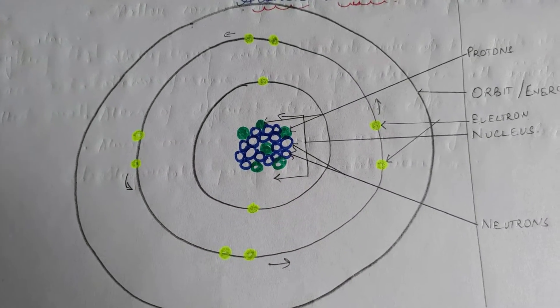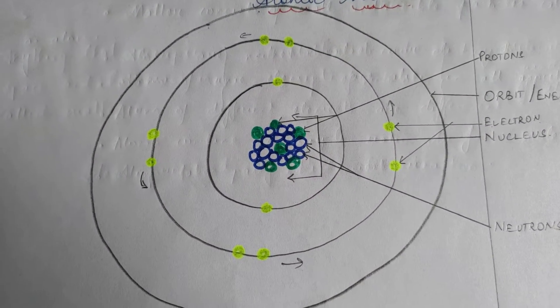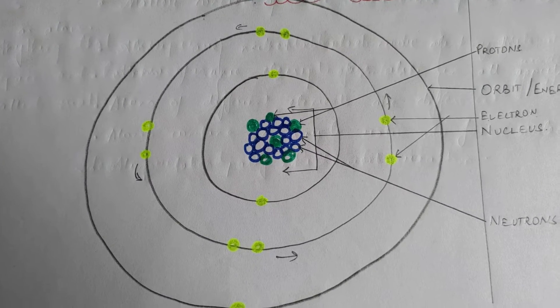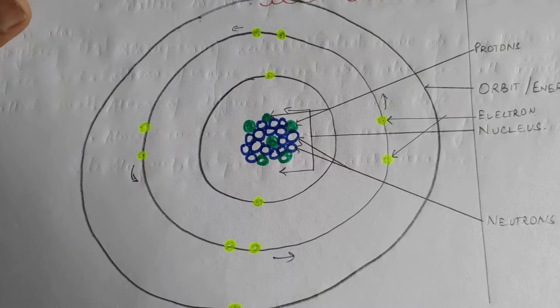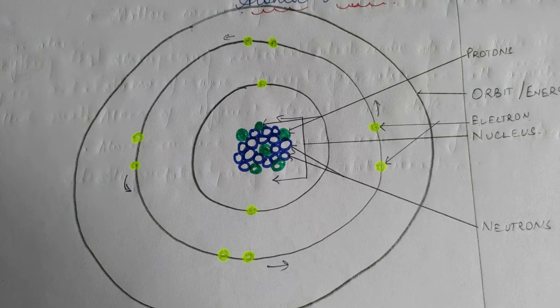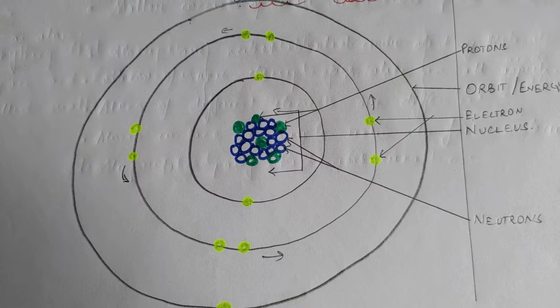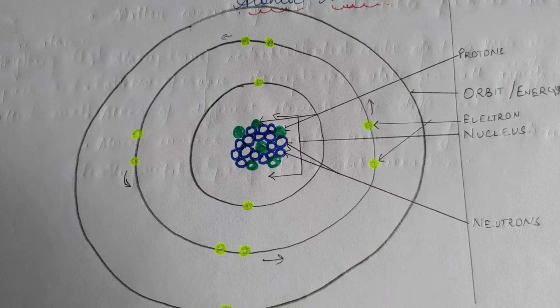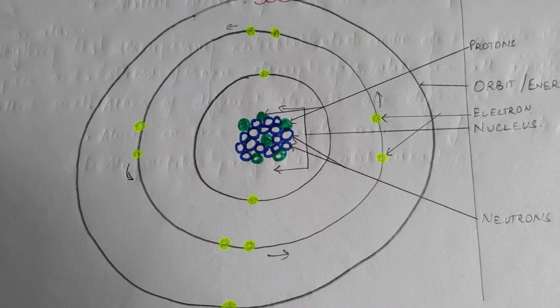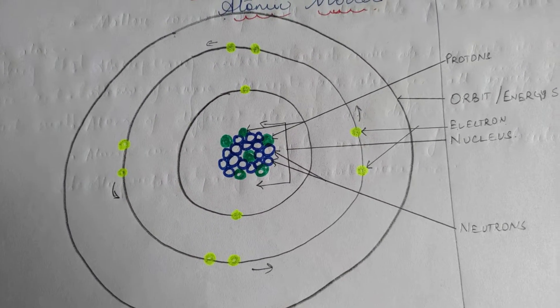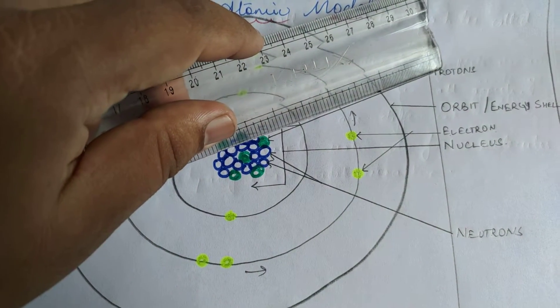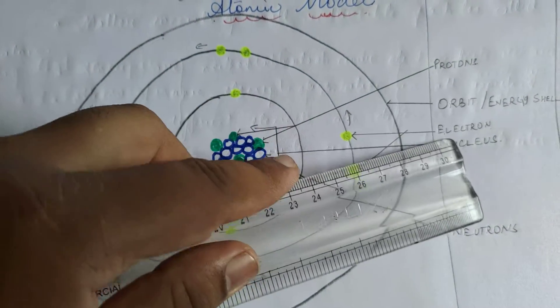The biggest failure that Dalton's atomic theory had to face was that he commented that the atoms are indivisible, something that cannot be divided. Later on it was found that the atoms can be further divided into fundamental particles that we have already learnt about: the protons, the neutrons and the electrons.